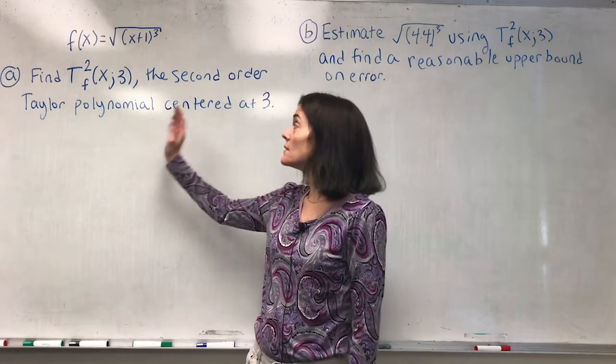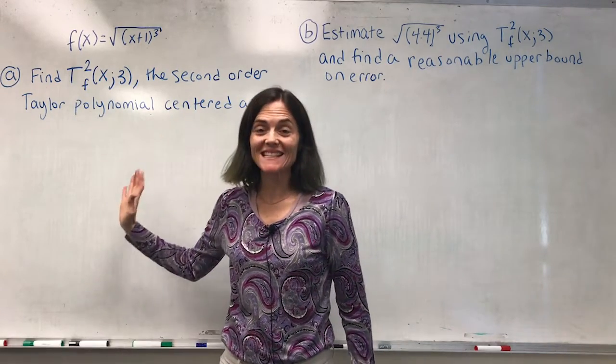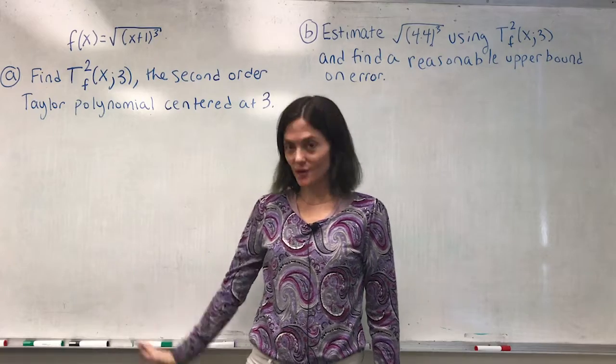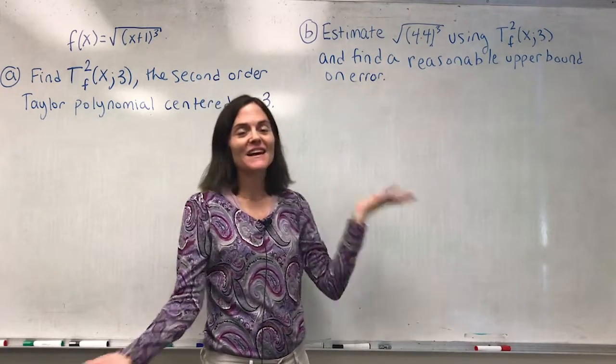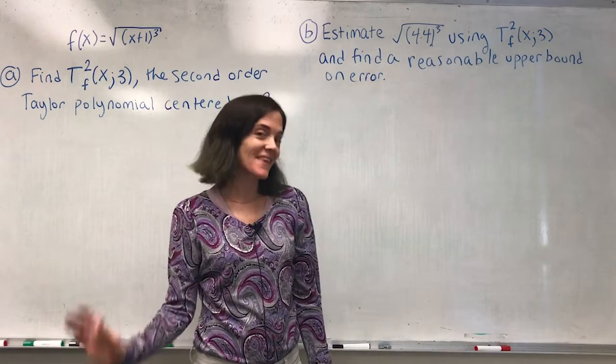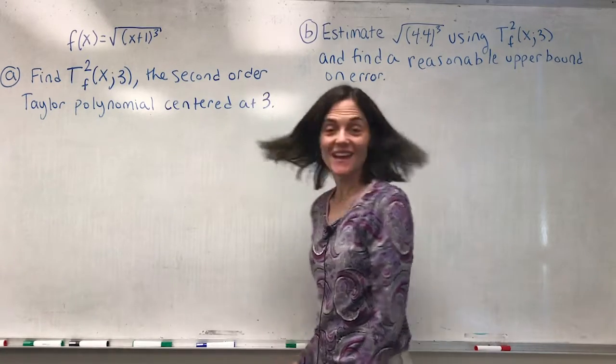In this example, we will calculate a second order Taylor polynomial, use it, and then find a reasonable upper bound on the error.